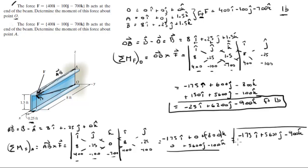That is the final answer for the second part, which is the moment about A. So in summary: moment about O is negative 25i plus 6200j minus 900k foot-pounds, and moment about A is negative 175i plus 5600j minus 900k foot-pounds.